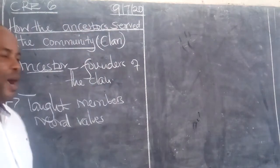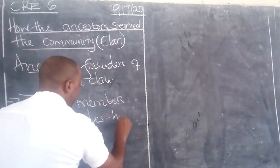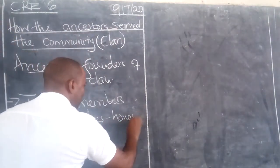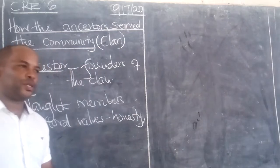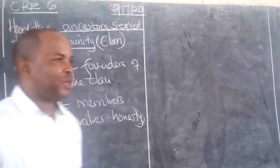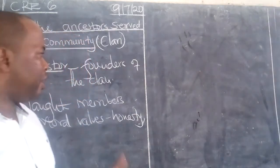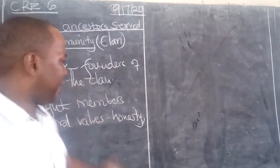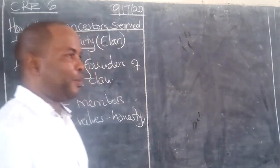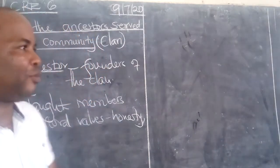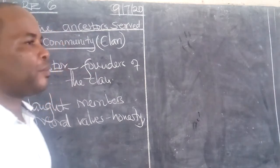Can we name some of the moral values that we know? One is honesty. Honesty is one of the moral values — something that was highly cherished in traditional African society. Honesty was very important and is one of the moral values we talk about today.